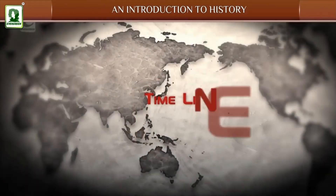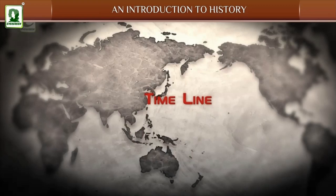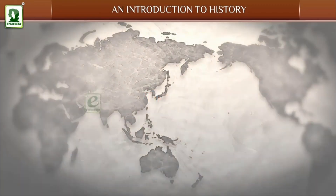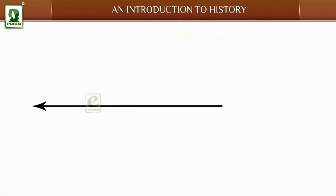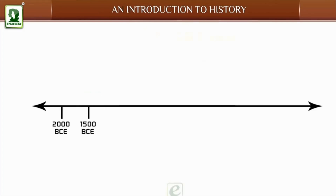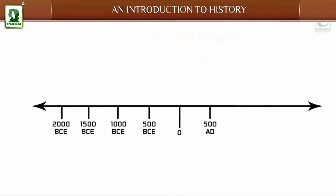Timeline: Events of the past can be shown on a timeline. For example: 2000 BCE, 1500 BCE, 1000 BCE, 500 BCE, 0, 500 AD, 1000 AD, 1500 AD and 2000 AD.